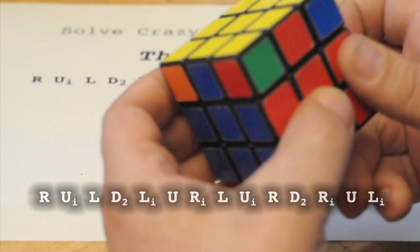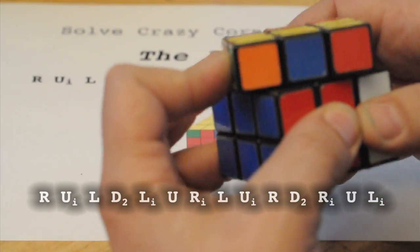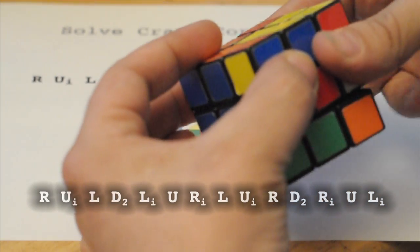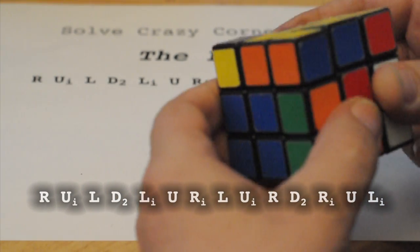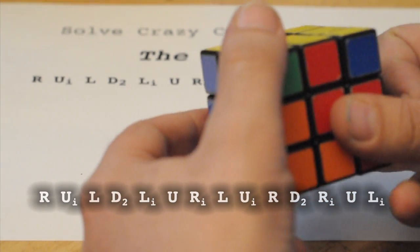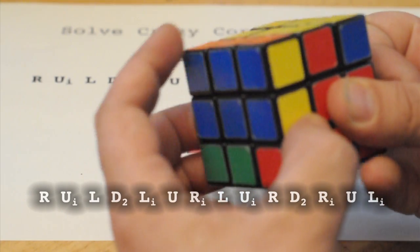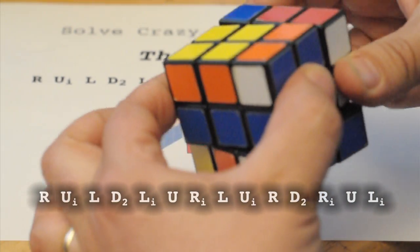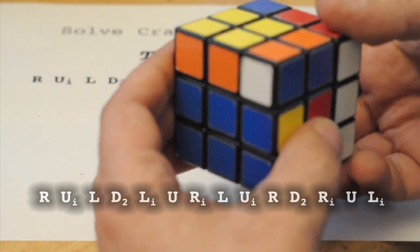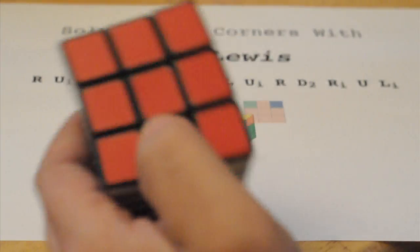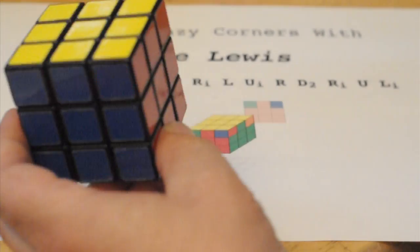I'm going to go right, up, backward, left, down two, left, backward, up, right, backward, left, up, backward, right, down two, right, backward, up, left, backward, from crazy corners to solved.